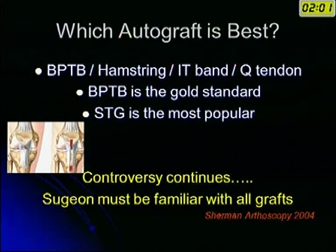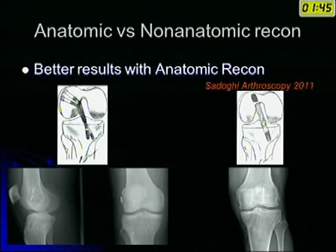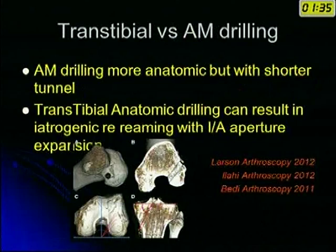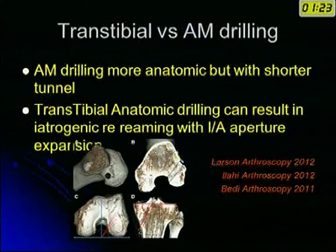As far as anatomic versus non-anatomic reconstruction is concerned, there are plenty of studies coming out in the Journal of Arthroscopy showing that anatomic reconstruction — and I'm not talking about double bundle versus single bundle, just anatomic versus non-anatomic — has given different, better results. Regarding transtibial portal drilling versus anteromedial portal drilling: definitely anteromedial drilling gives much more anatomic tunnels, but the femoral tunnel is going to be shorter. Transtibial anatomical drilling can result in iatrogenic injury to the tibial aperture if you are not careful.